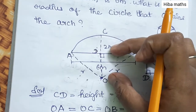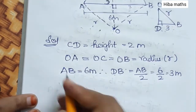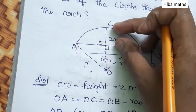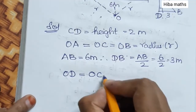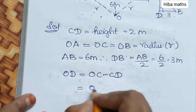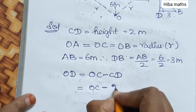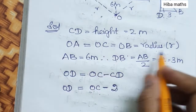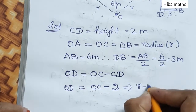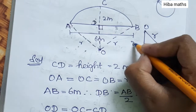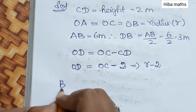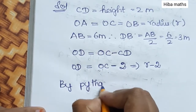OD equals OC minus CD. Full OC value minus CD gives us OD equal to R minus 2. So we will apply the Pythagorean theorem to triangle OBD.